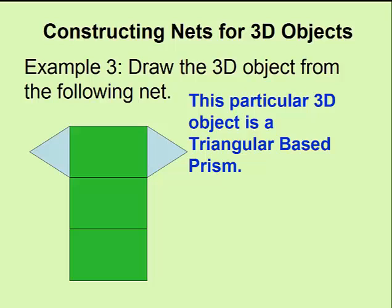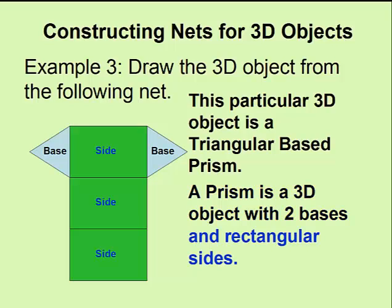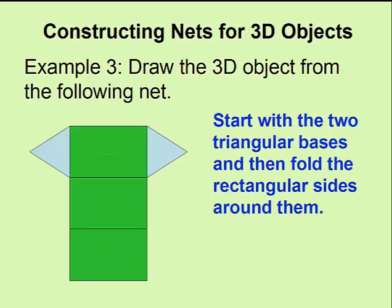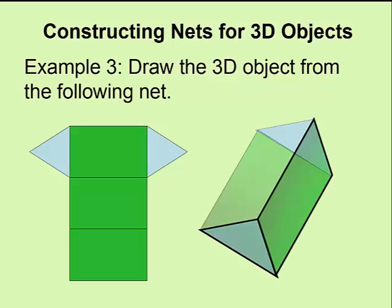This particular net is called a triangular base prism. We know this because a prism has two bases. And in this case, they're both in the shape of triangles. A prism also has rectangular sides. To produce the three-dimensional object for this particular net, you'll begin with the two triangular bases and then fold the rectangular sides around them. There you have your triangular-based prism.